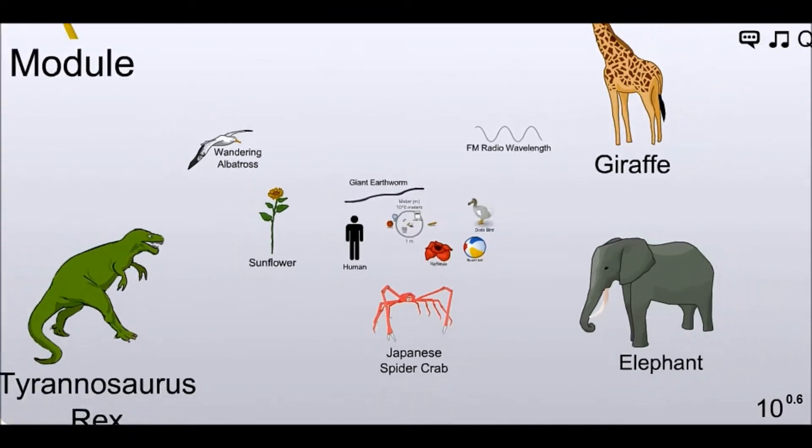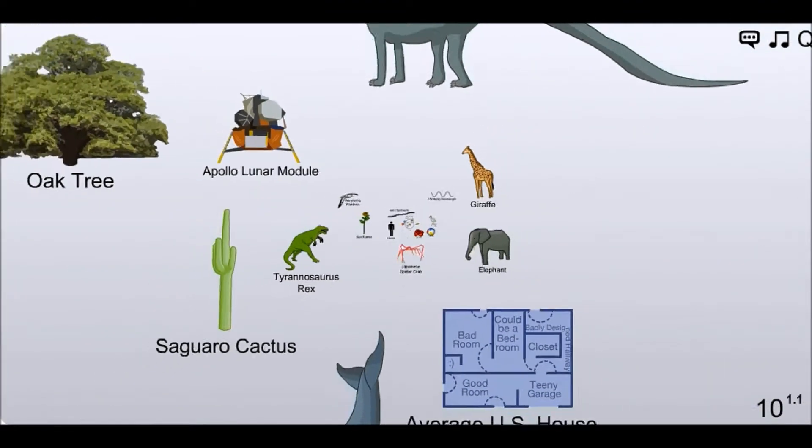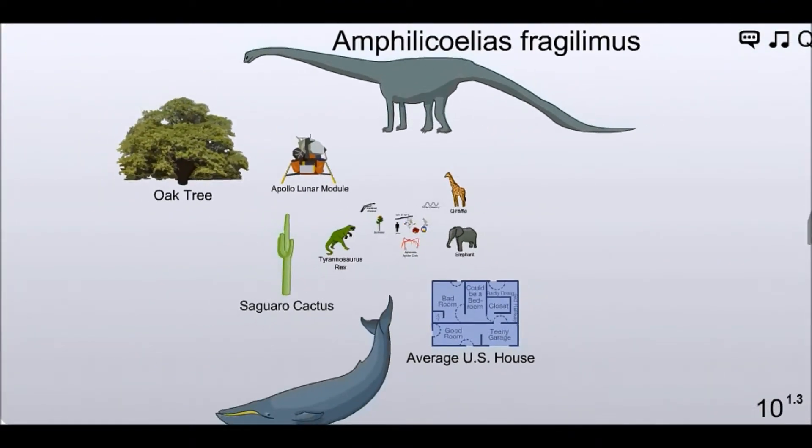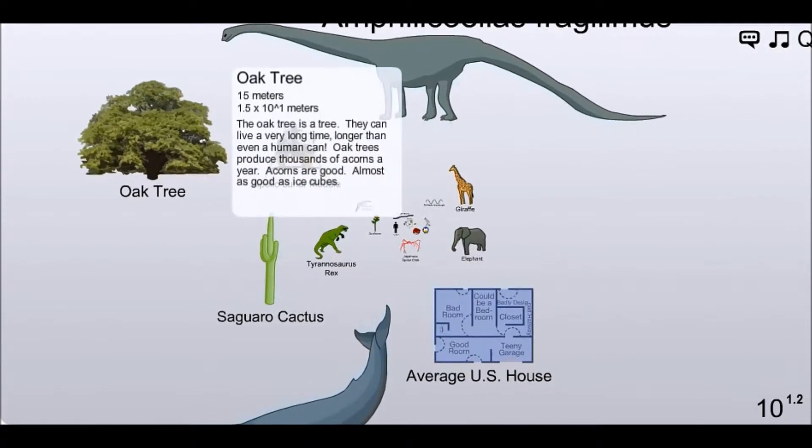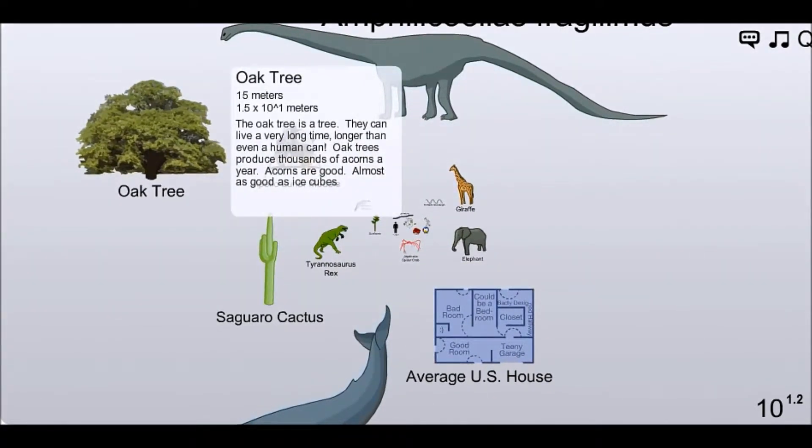I actually like going and seeing the bigger things out in this. Look, we got an oak tree. That's a big oak tree. They can live a very long time. I mean, not as long as a redwood, but nothing really lives as long as a redwood. Oak trees produce thousands of acorns a year. I should know. I live next to seven of them. It's terrible.